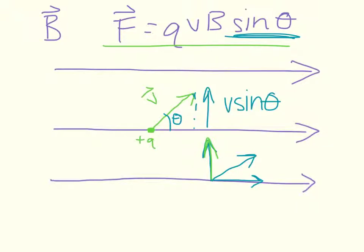This means that a particle that is moving exactly parallel to a magnetic field will feel no force, because no component of its velocity will be perpendicular to the magnetic field.